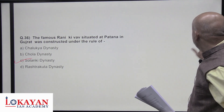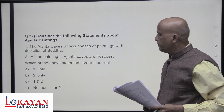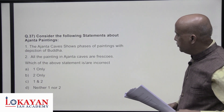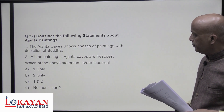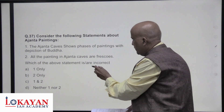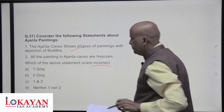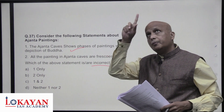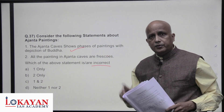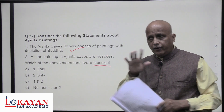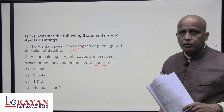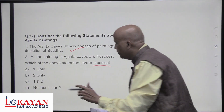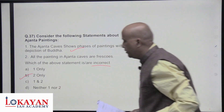Consider the following statements about Ajanta paintings. The Ajanta caves show phases of painting with depictions of Buddha — correct. All paintings in the Ajanta caves are frescoes — this is not entirely true; most are frescoes but those painted on ceilings are not exactly frescoes since fresco involves applying paint on a wet surface, whereas the ceiling paintings are directly on rock. So the second statement is not true — only the second is incorrect.